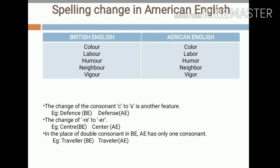In spelling there are also changes in American English compared to British English. For the word 'colour,' British English spelling is C-O-L-O-U-R, whereas in American English it is C-O-L-O-R. For the word 'labour,' British spelling is L-A-B-O-U-R but in American English it is L-A-B-O-R. Similarly, words like 'humour,' 'neighbour,' and 'vigour' drop the U in American English.